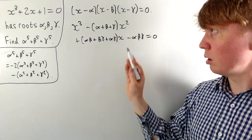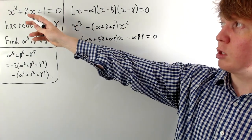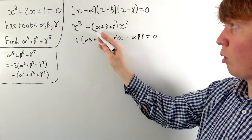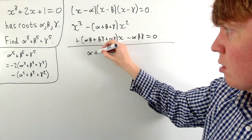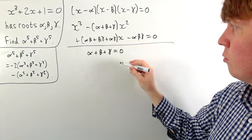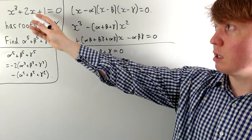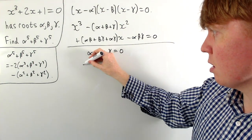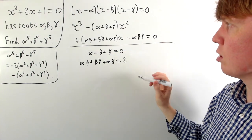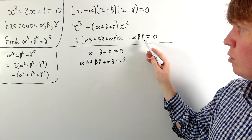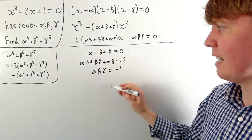Comparing coefficients with the original cubic: the coefficient of x squared is zero, so alpha plus beta plus gamma equals zero. The coefficient of x is two, so alpha beta plus beta gamma plus alpha gamma equals two. And the constant term gives alpha beta gamma equals negative one.